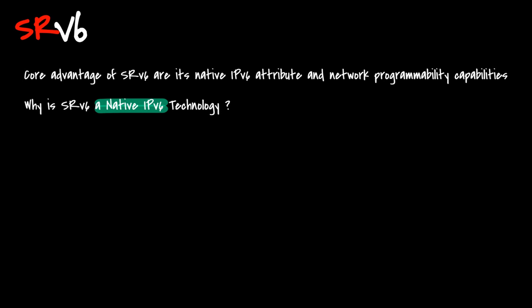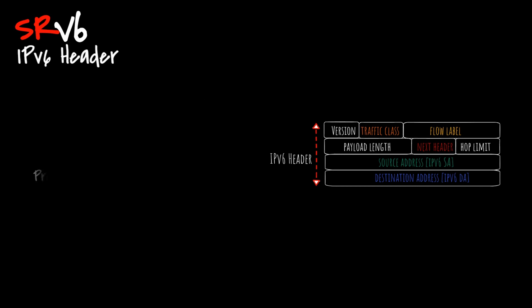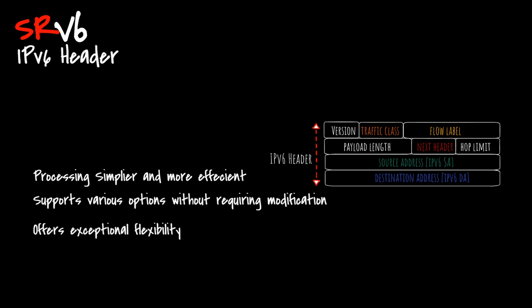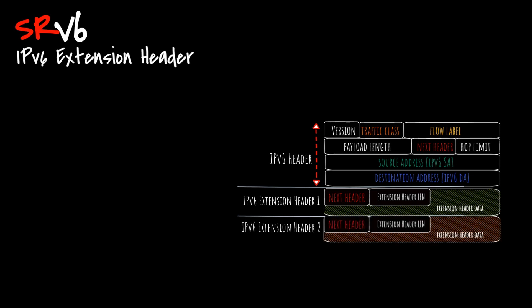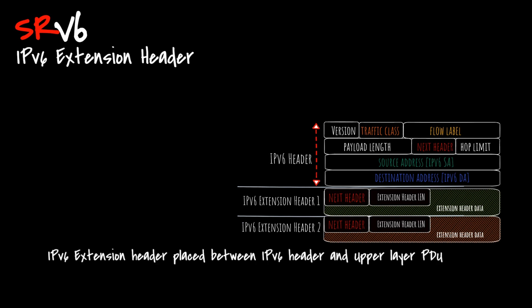SRv6 is inseparable from the IPv6 header. The IPv6 packet format is designed to simplify the basic header — typically a device only needs to process the basic header to provide IP connectivity. The IPv6 header does not carry fields such as fragment offset, header checksum, and options, unlike IPv4, making the IPv6 header simpler and more efficient. IPv6 utilizes extension headers to support various options without requiring modification of the existing packet format. The IPv6 extension headers are placed between the IPv6 basic header and the upper-layer PDU, and the source node adds extension headers only when other nodes are required to perform specific tasks.